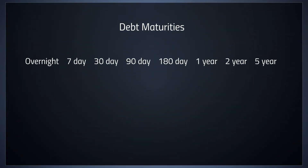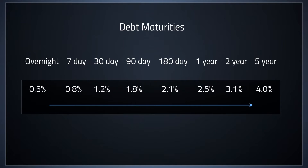Let's take a look at an example of some maturities of fixed income — different borrowings and lendings from overnight all the way up to 5 years. If we put some interest rates to that, we can see that they increase significantly from our overnight and 7 days all the way up to 5 years to 4%. What that reflects is not just the increased risk that the issuer will default on their borrowing, but market changes as well.